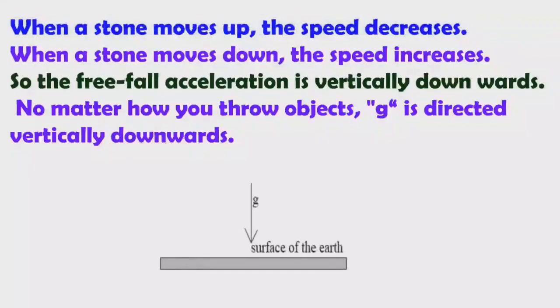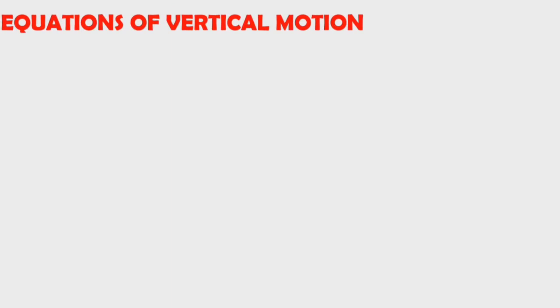G always acts towards the earth's surface or vertically downwards. No matter how you throw objects, g is directed vertically downwards. Now we will see the equations of vertical motion.